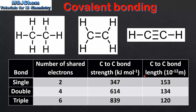Next we'll look at the carbon to carbon bond length. Looking at the data, the carbon to carbon single bond is the longest and the carbon to carbon triple bond is the shortest. So to summarize, the carbon to carbon triple bond is the strongest and also the shortest, while the carbon to carbon single bond is the weakest and also the longest.